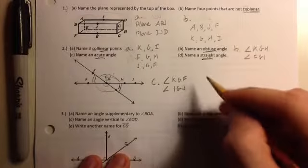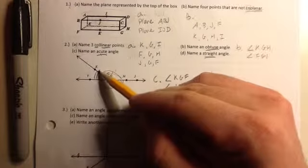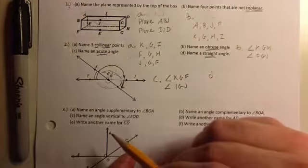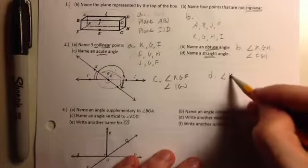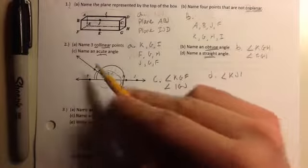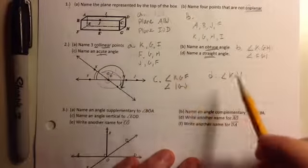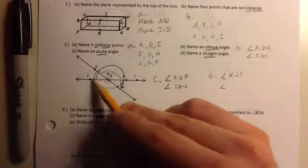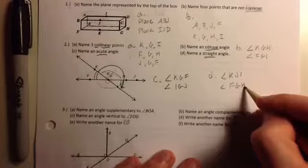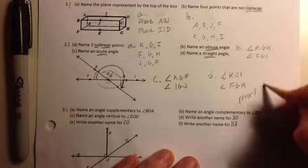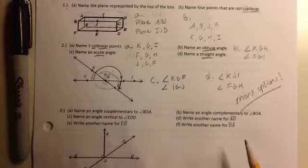D. Name a straight angle. Straight angle. Remember, a straight angle is 180 degrees. So, it would be from this line right here all the way back to the same line. So, something like K, G, I is a straight angle. Angle K, G, I. Notice how they're also collinear. They're on the same line from up here. Another straight angle could be maybe angle F, G, H, or angle F, G, J. Let's go with F, G, H. Again, there are many options to answer A, B, C, and D for number two. Many options.